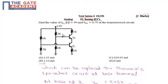Find the value of IB2 where β = 99 and VBE = 0.7V for this transistor circuit.